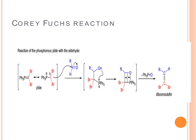The second step is reaction of the phosphorous ylide with aldehyde. In the phosphorous ylide, phosphorous is positively charged and there is a nucleophilic carbon atom. This nucleophilic carbon atom attacks on the electrophilic carbonyl carbon of the aldehyde, where oxygen acquires a negative charge. Then this negatively charged oxygen atom attacks on the positively charged phosphorous, generating a four-membered oxaphosphetane ring. Since phosphorous has a tendency to form a bond with oxygen, there is generation of dibromo olefin, and triphenylphosphine oxide is the byproduct.